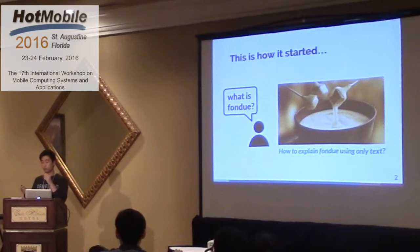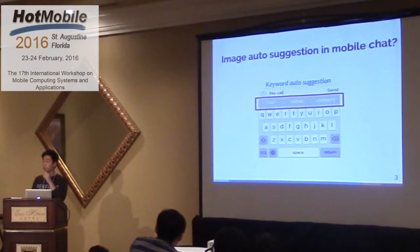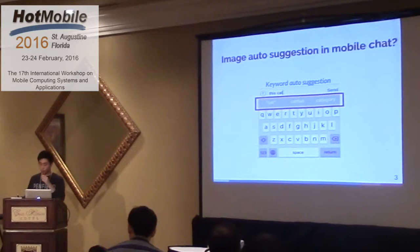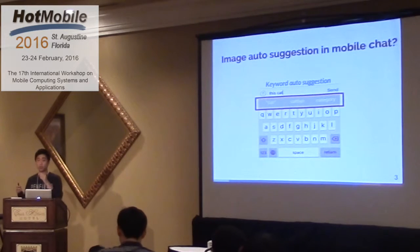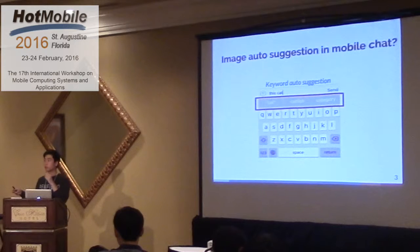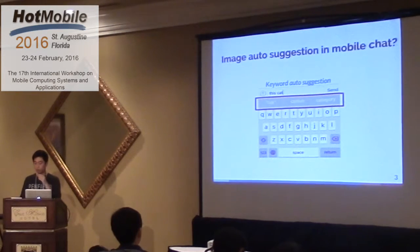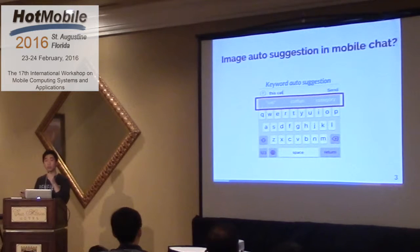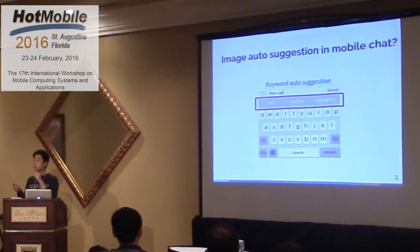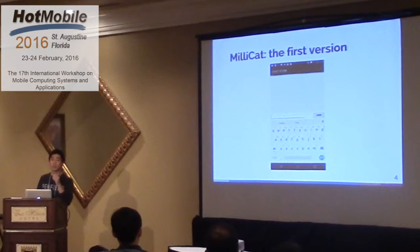We thought image auto-suggestion in mobile chatting would be really useful. There was a similar feature — keyword auto-suggestion from iOS and Android — where when you type some keyword, it automatically suggests the next candidate keyword. So why don't we design a service like this for images? When you type some word, it gets related pictures from the web in the current context. That's why we developed our initial version of the system. We call it Millicat — this term stands for 'Millions of Chatting.'